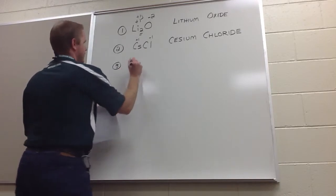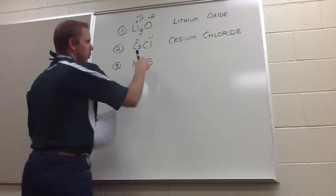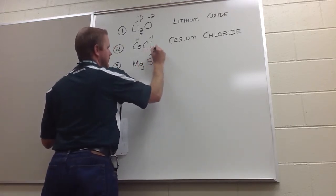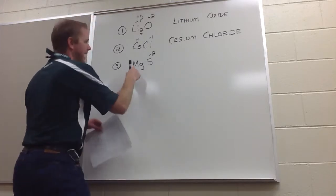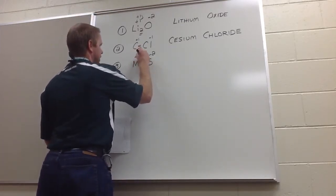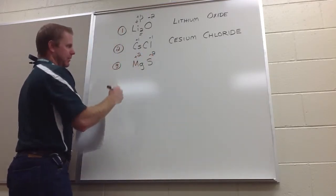Number three, Mg and S. One magnesium, one sulfur. Well, this is a chalcogen. Its charge is minus two. Sulfur is. Magnesium, it is an alkaline earth metal. Its charge is plus two. Plus two, minus two cancel each other out.